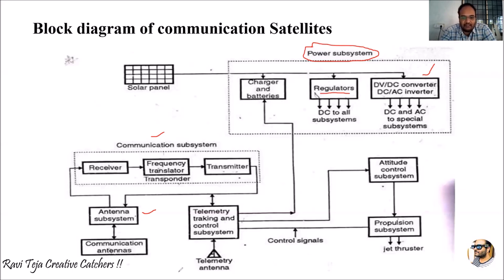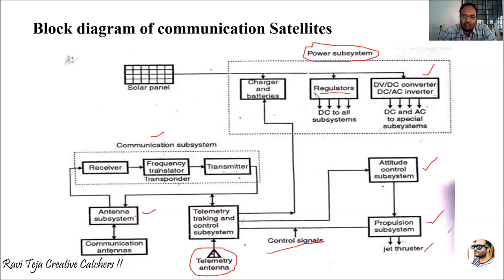We also have a telemetry tracking and control subsystem along with a telemetry antenna and several control signal lines. Additionally, there is an attitude control subsystem and a propulsion control subsystem with jet thrusters. Whenever satellites moving around the earth tend to drift from their orbital path due to gravitational forces, the propulsion subsystem and jet thrusters are used to put the satellite back into its orbital path.